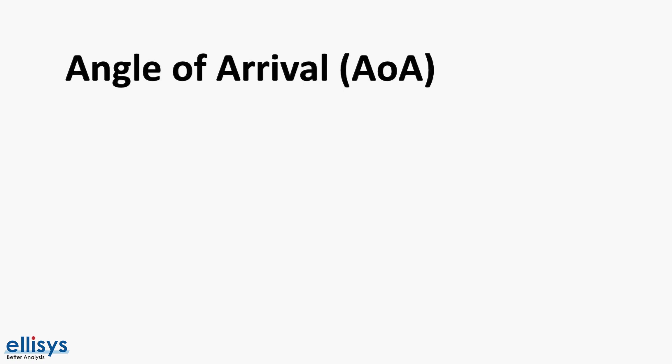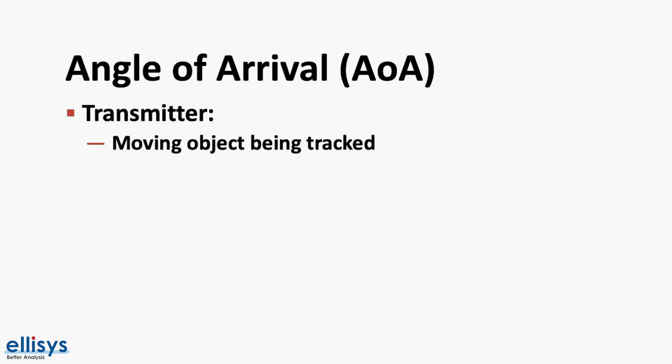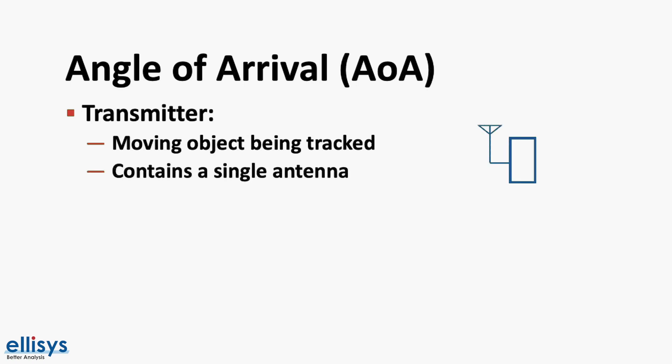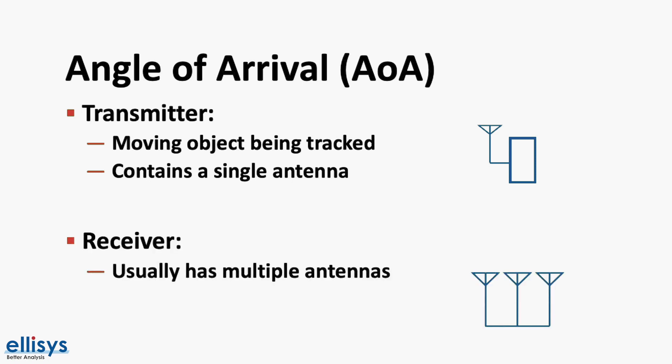Angle of arrival is usually used in a system that comprises a moving transmitter device that we need to track. The transmitter device will use a single antenna to transmit the signals, whether advertising packets or data packets during a connection. The receiver, on the other hand, is usually equipped with an array of multiple antennas. Using these antennas, the receiver is able to estimate the angle of arrival of the signal being transmitted by the moving device.